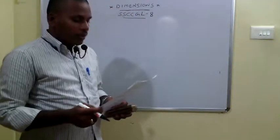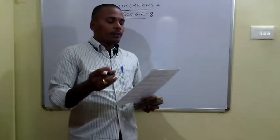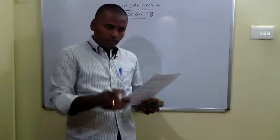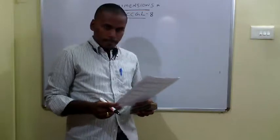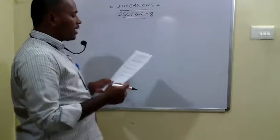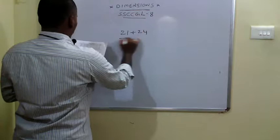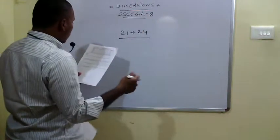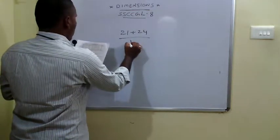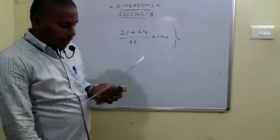The 72nd problem asks in which type of mission tools there is continuous increase in production over all years. Observing each column, the continuous increment is found in P-type mission tools. Answer is option A. The 73rd problem: total production of P-type in 2013 and 2014 is 21 plus 24 equals 45. R-type production in 2015 is 32. So 45 by 32 into 100 gives approximately 140 percent.